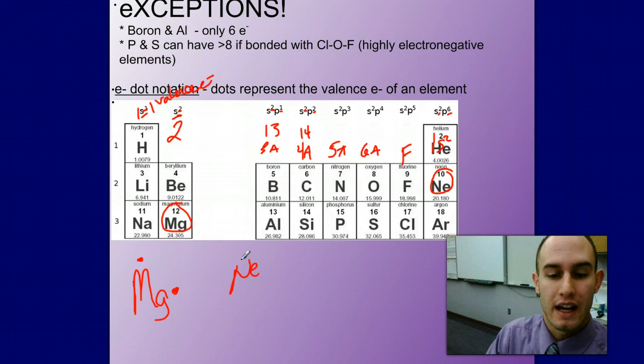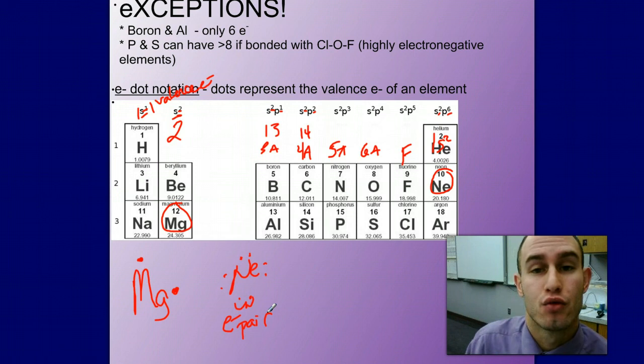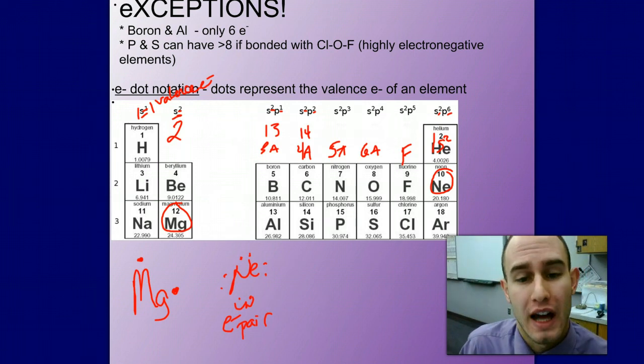So neon, we are going to represent it with 8 dots around it, 2 per side. These we call our electron pairs. Each one of these on this side is an electron pair. That's important to know as well. We use this in writing and drawing Lewis dot structures.